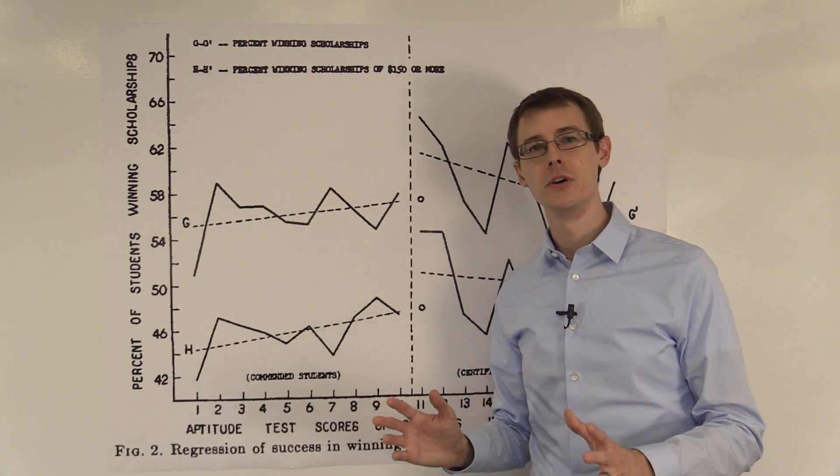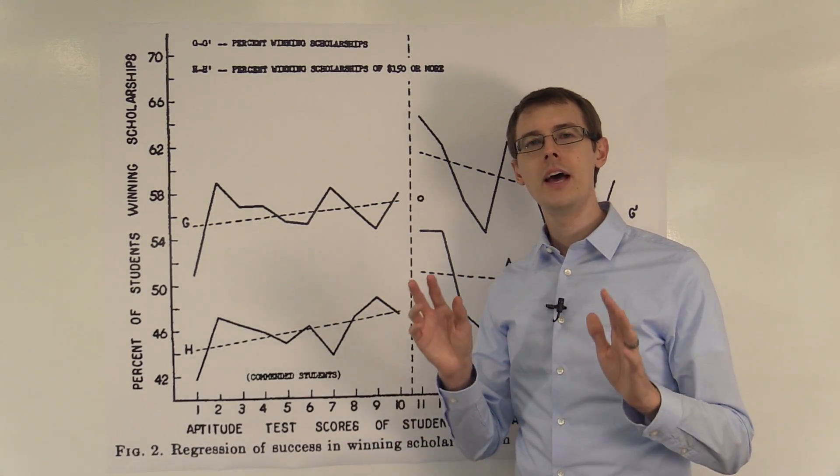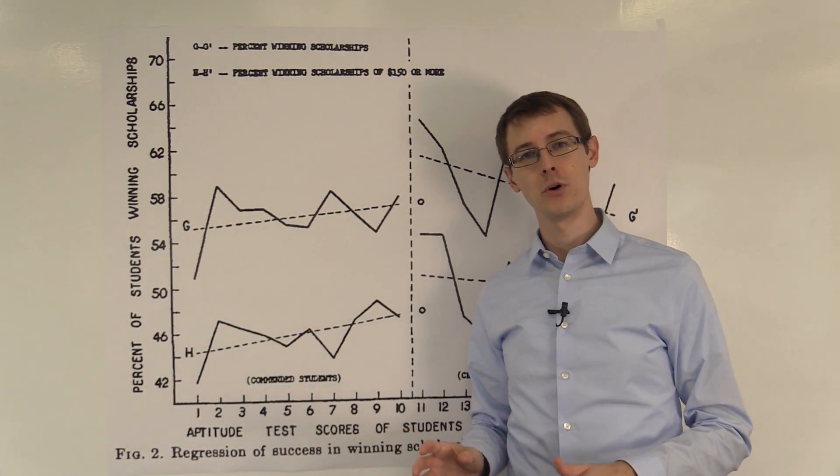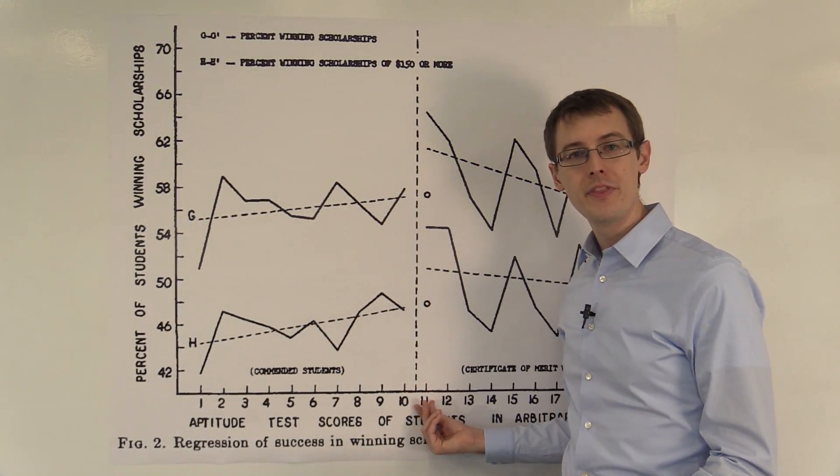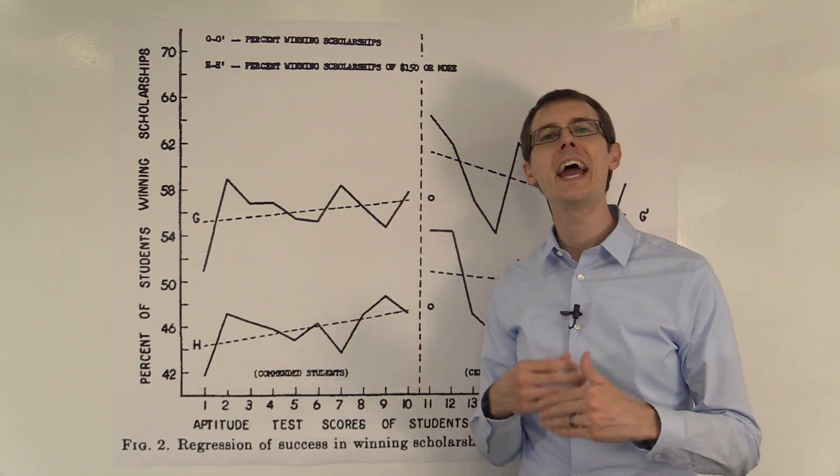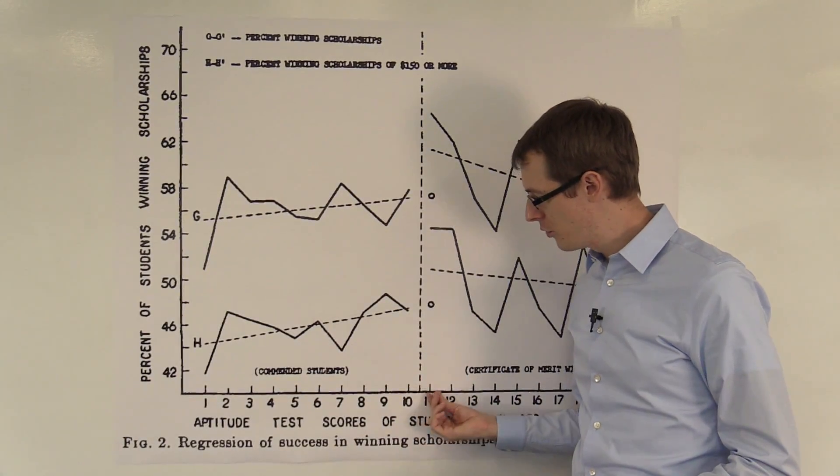So the simplest thing we can do, by analogy to how analyzing randomized experiments works, is to say: these students over here are our treatment group, they got treated. So let's just look at the average outcome for those students.